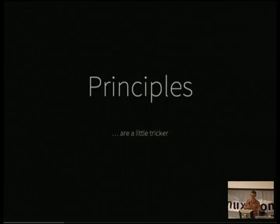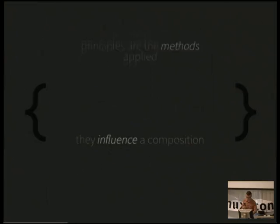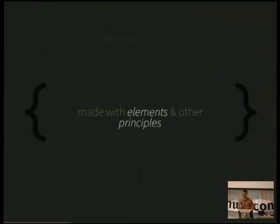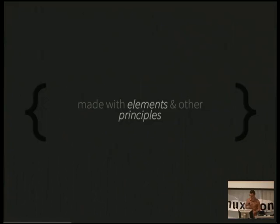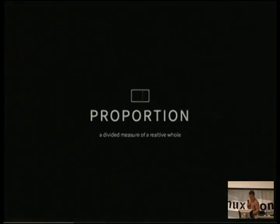I'm trying to make sure we have exact terminology, because arguing with designers is a very sticky thing. Principles are a little bit trickier — they're the methods applied. Like salt creating saltiness. They influence a composition, but they are not the composition. They're made with elements, but also with other principles — so it's really confusing. If you Google the elements and principles of design, you'll come up with a million different variations, mostly on the principles aspect. This is mine — it may not be academically accurate, but it's what I've been living with and not getting fired by.